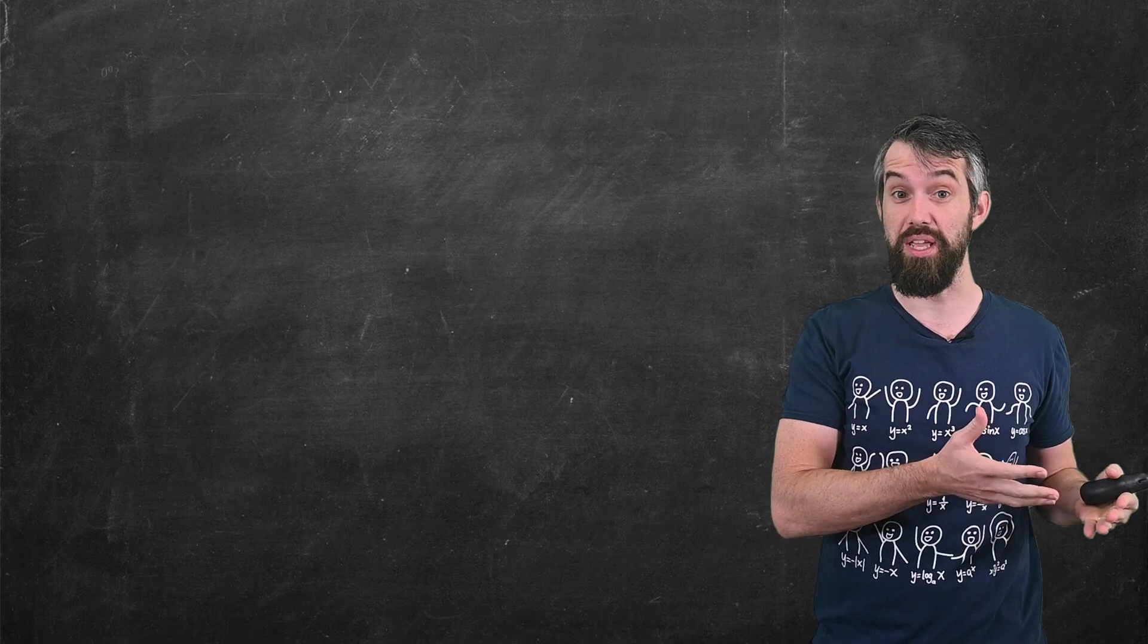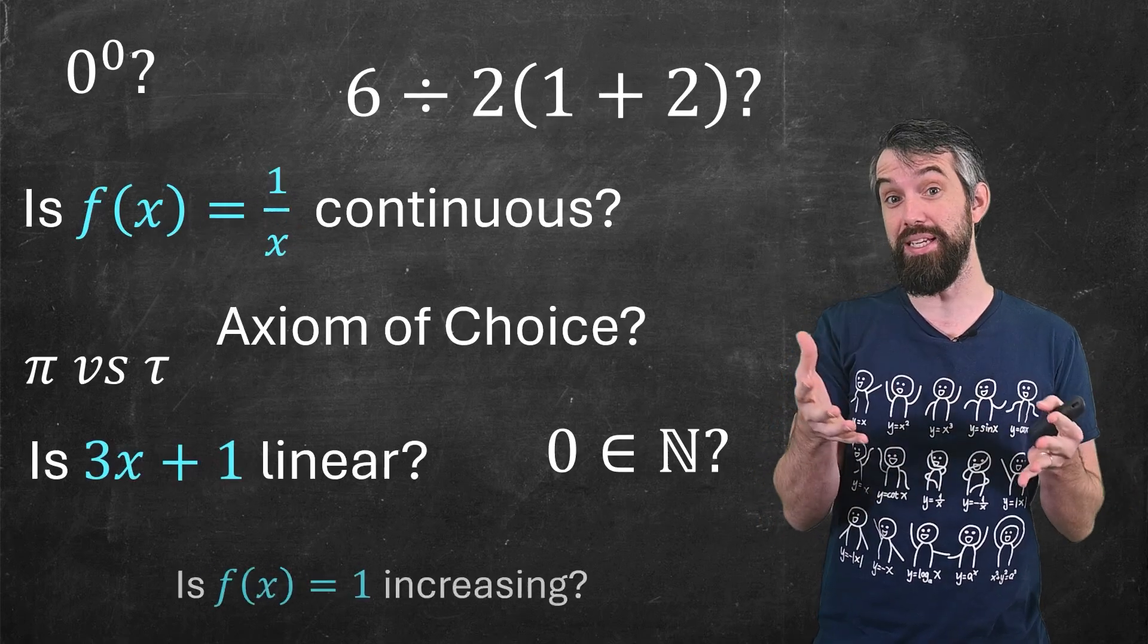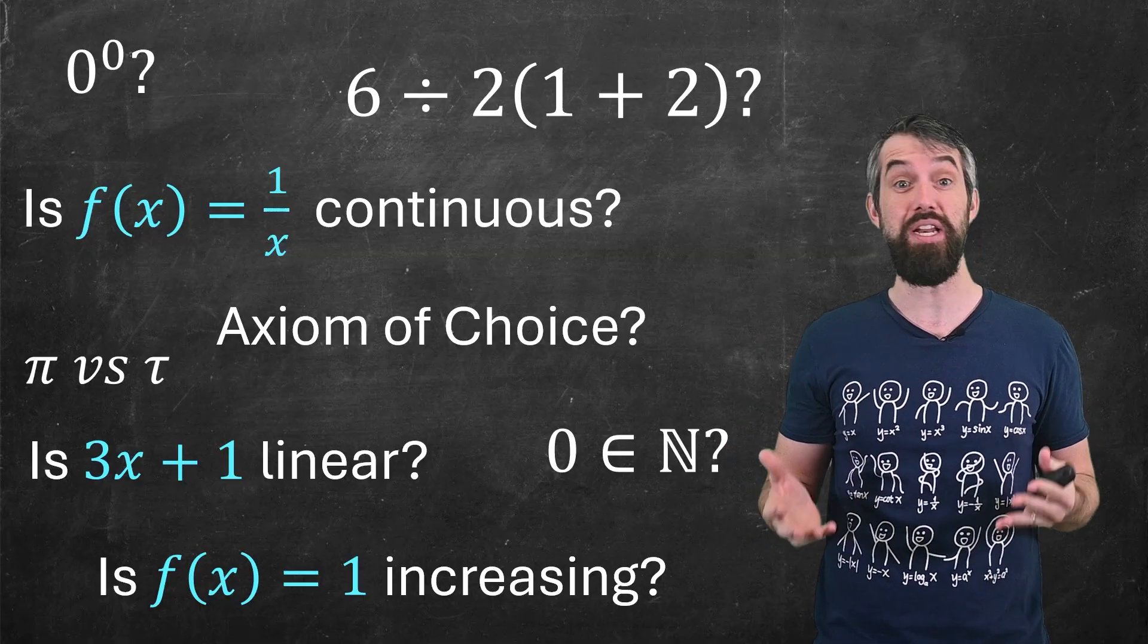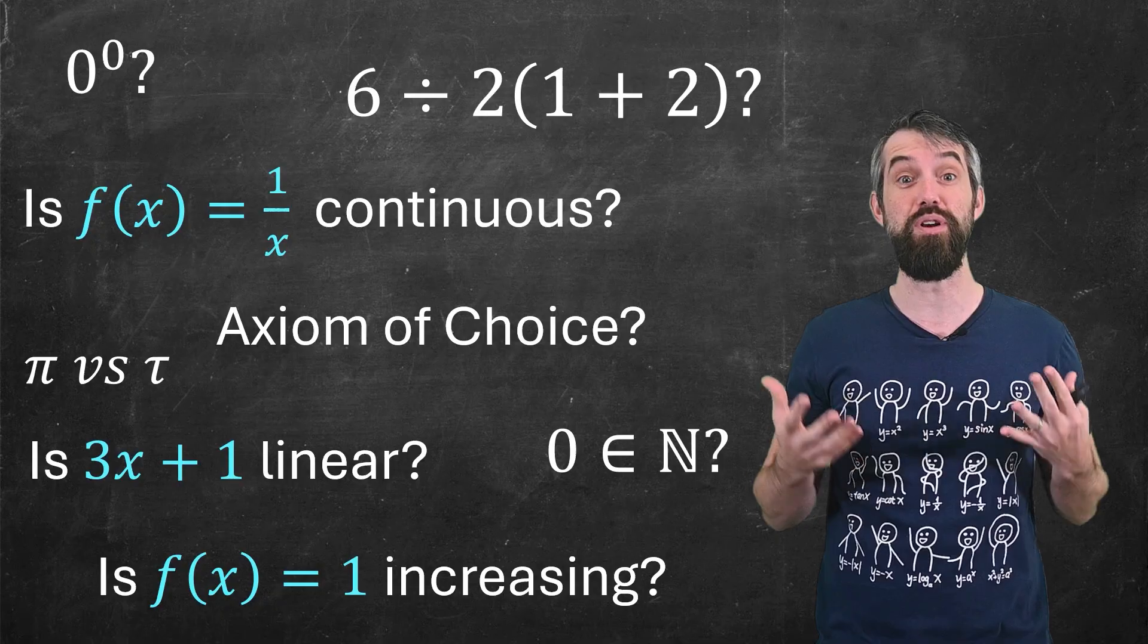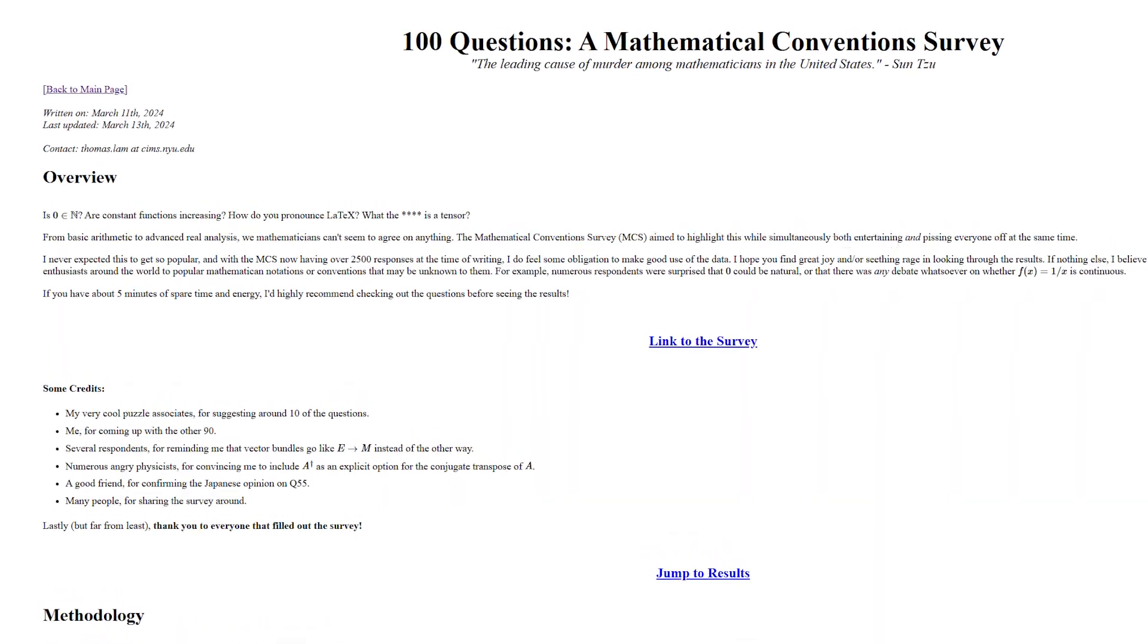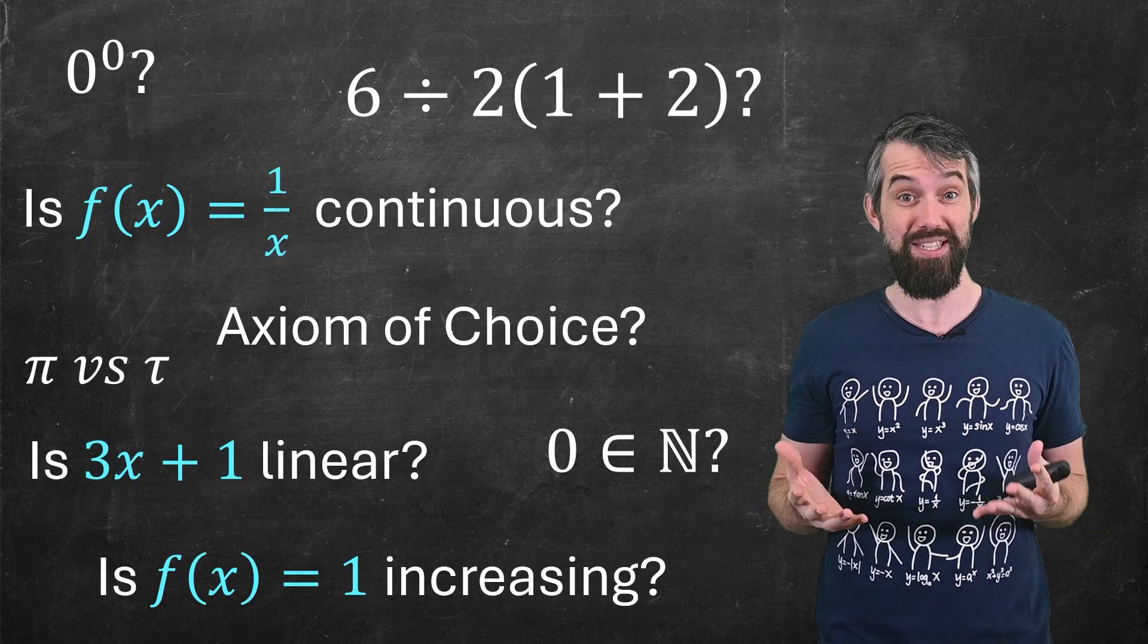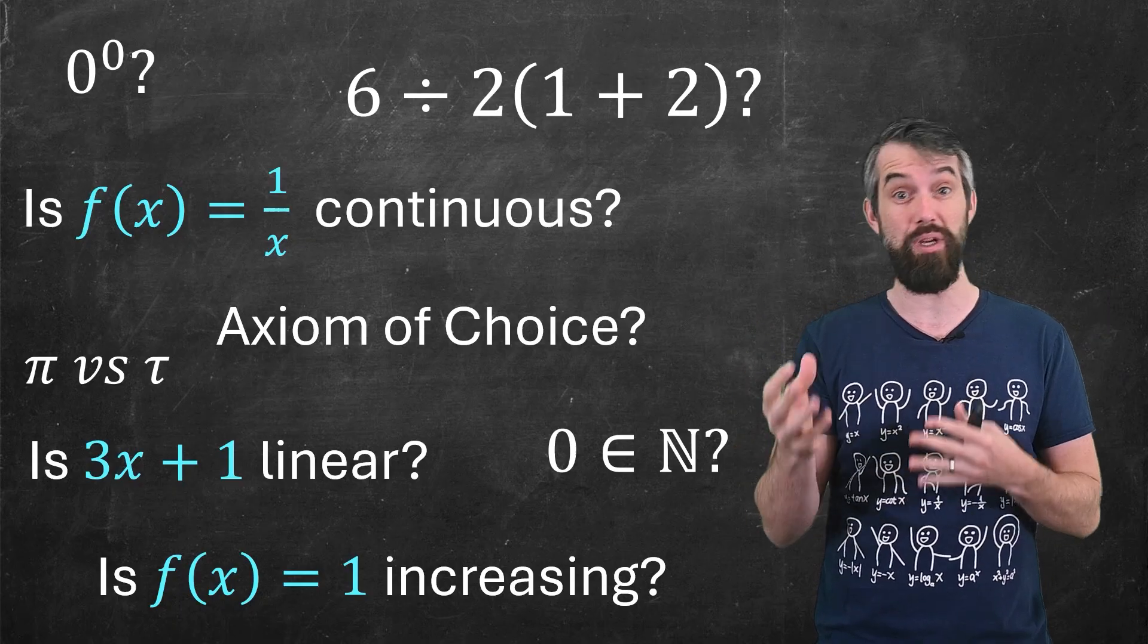Mathematicians don't always agree, even about some of the most basic definitions used in mathematics. Thomas Lamb created a survey asking 2,500 mathematicians a hundred math convention questions, and the results are kind of fascinating and get into some really interesting mathematics.